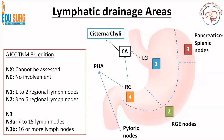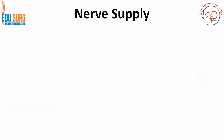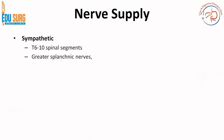But you have to understand and remember these lymph nodes if you want to operate on stomach or understand how the disease spreads from stomach. Now coming to nerve supply — again a very important topic if you want to understand surgeries for peptic ulcer, vagotomies, and drainage procedures. Sympathetic supply is T6 to T10 spinal segments through the greater splanchnic nerves and the celiac and hepatic plexus.